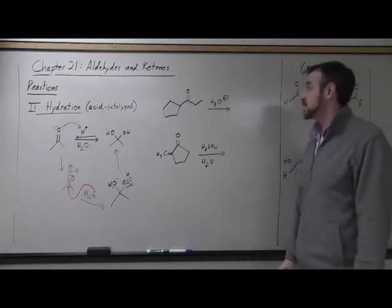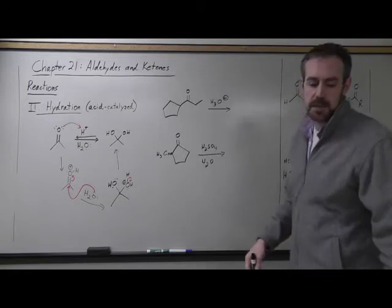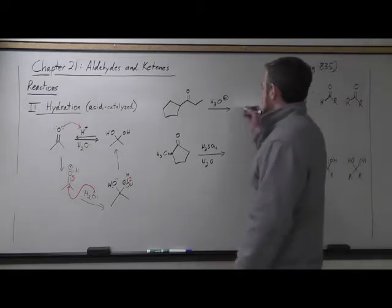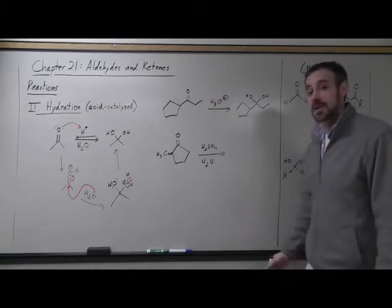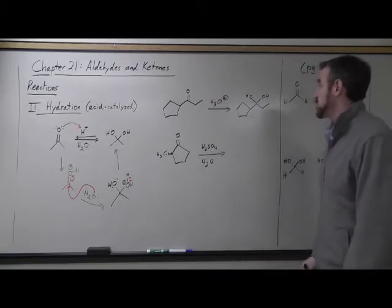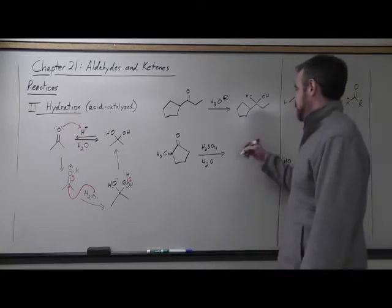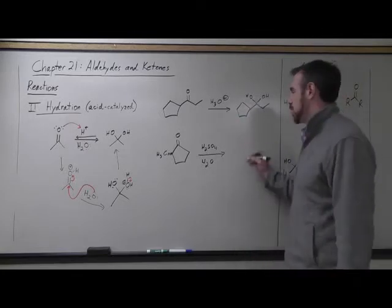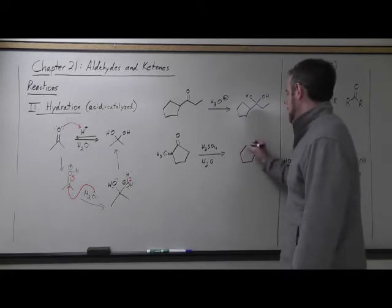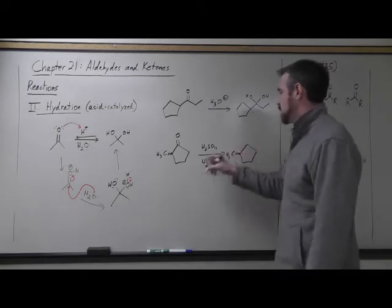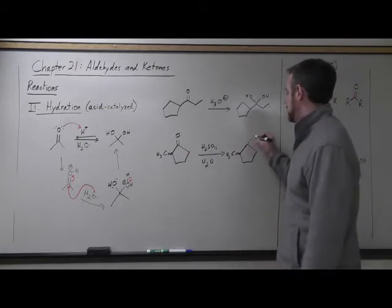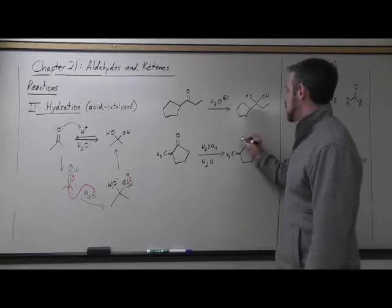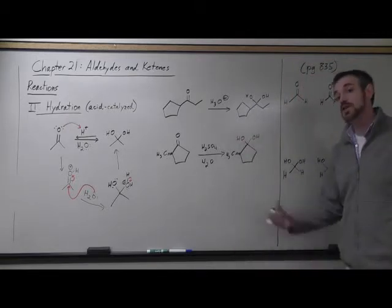Looking at these two reactions involving cyclic ketones, all you're really doing is redrawing the carbon backbone — where there was one oxygen with a double bond, there are now two hydroxy groups with single bonds. There won't be any chirality introduced because the same group is bonding there. If there was a chiral center elsewhere in the molecule, we're not reacting at that position, so it remains unchanged. No tricks — we get the hydration product.